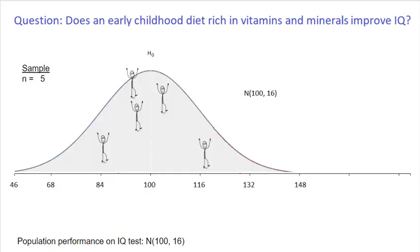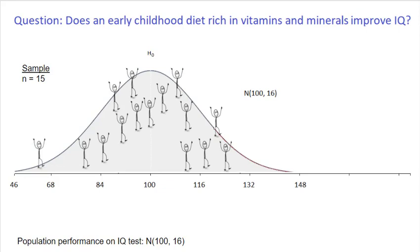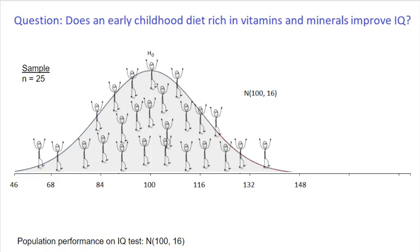So let's go ahead and record the data of our 25 participants. Here are the first five, and we can add more as we go along. Now we have all 25 participants, and their sample mean came out to be 100.7. Numerically, 100.7 is greater than the general population mean of 100.